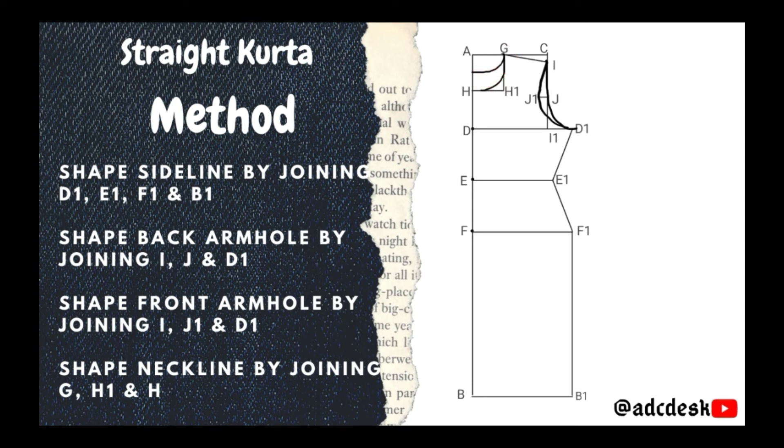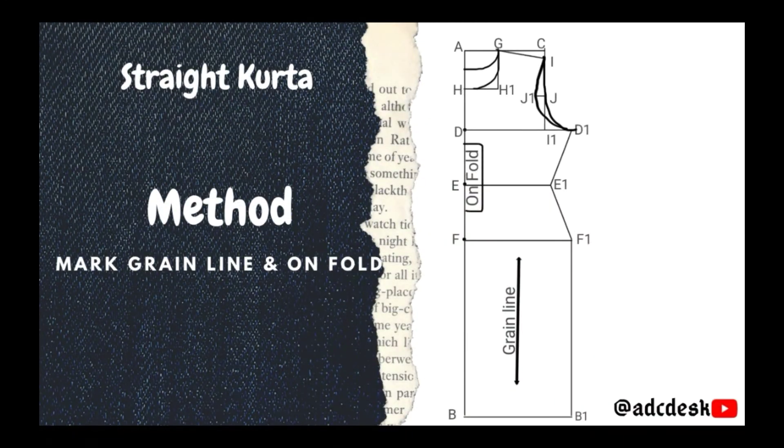Then mark the grainline. That will be the grainline, which is always parallel to the selvedge line. On fold, very important. Wherever it is on fold, that means the fabric will fold from that side. Never cut that section. So here, this A to B line is on fold. That means we have to fold the fabric from here.